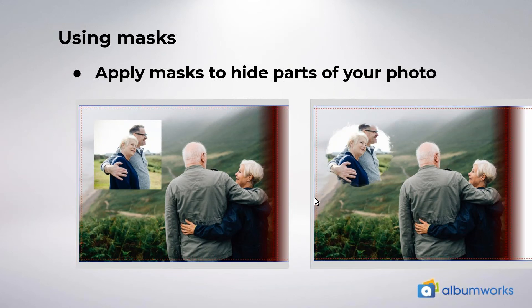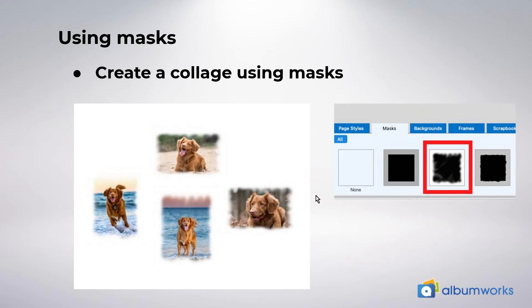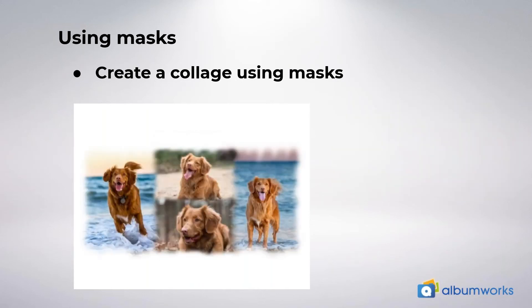Here's an example: we have four images on the page to begin with. Next I apply one of the masks that has a soft or fuzzy edge, applied to each of the photos. You can see how the edges now have a soft faded look to them. Then I click and drag the images closer together so parts of them are overlapping, creating a soft blended collage look. You could do this with just two photos or a whole series.